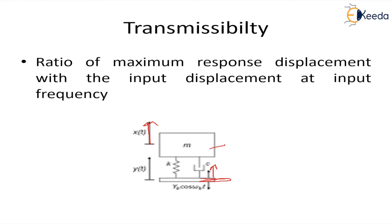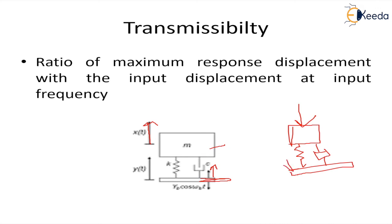This is different from force transmissibility. In force transmissibility, a force is applied on the mass and part of it is transmitted to the ground or base — that forms the ratio. Displacement transmissibility is the opposite: when there is displacement at the base, the mass also starts moving, and the ratio of the mass displacement to the base displacement is called displacement transmissibility.